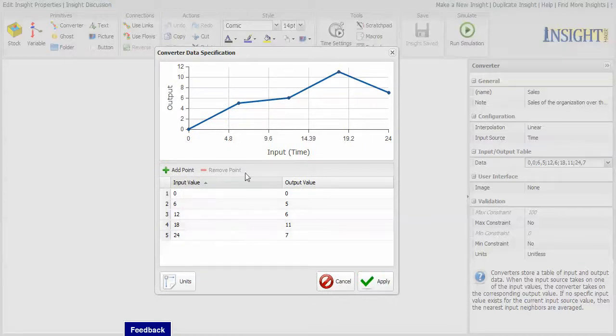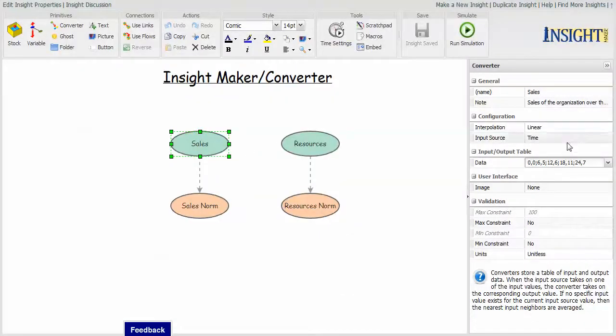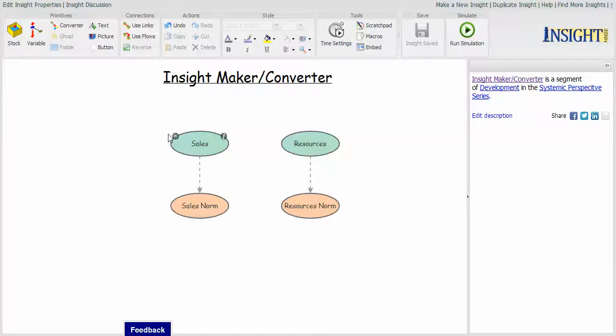You can define this in such a way that the value it uses for points between the points you define are determined based on a linear interpolation of the values between those points.